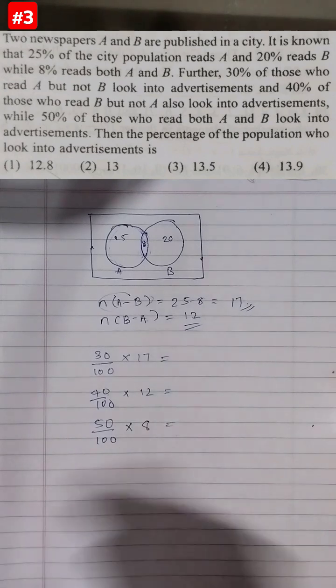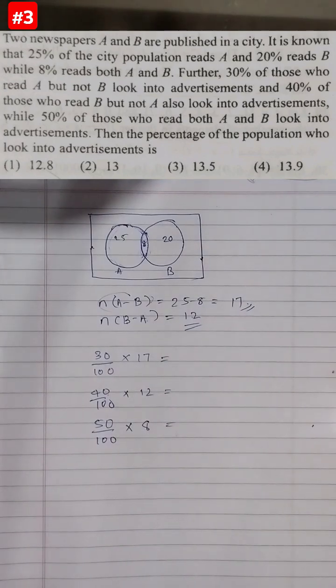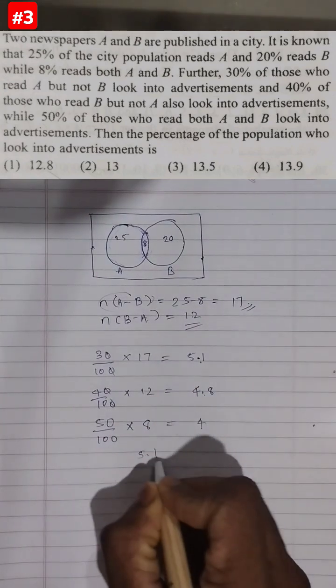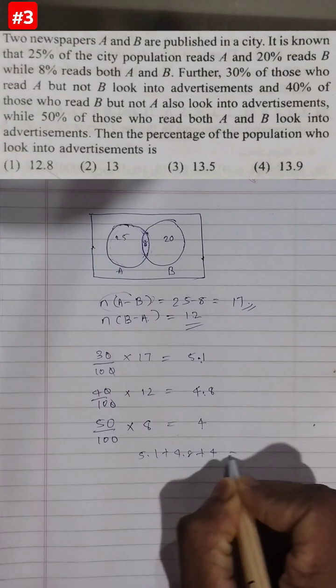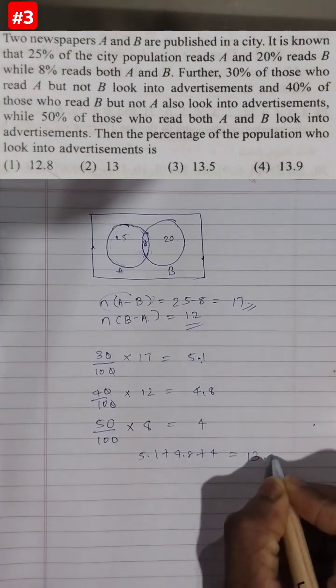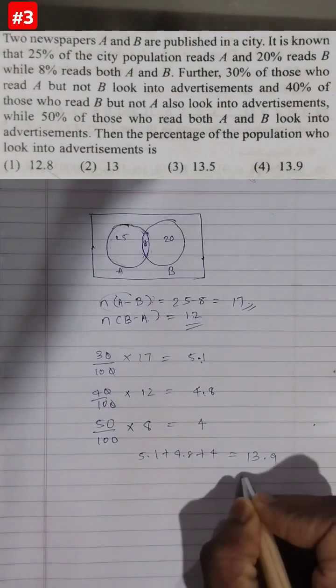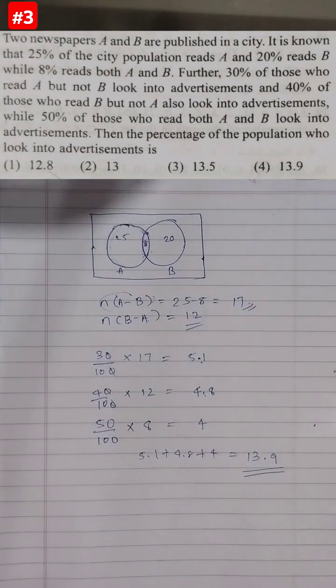Adding these up will give us the total number of people who are looking into advertisements: 5.1 plus 4.8 plus 4, which is actually equal to 13.9. So that is option number 4. Simple question.